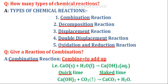Next question: how many types of chemical reactions are there? Chemical reactions have many types, but here we are discussing some important types: number one — combination reaction; number two — decomposition reaction; number three — displacement reaction; number four — double displacement reaction; and number five — oxidation and reduction reaction.